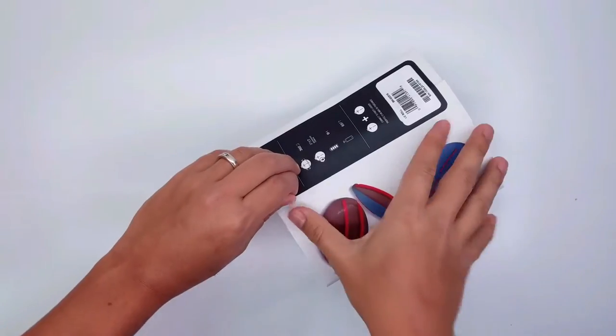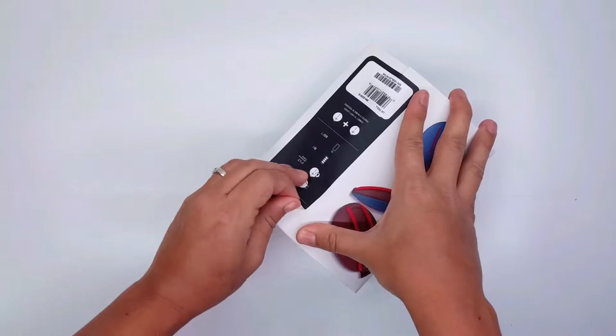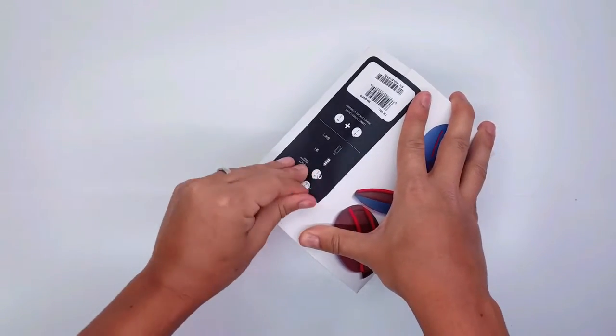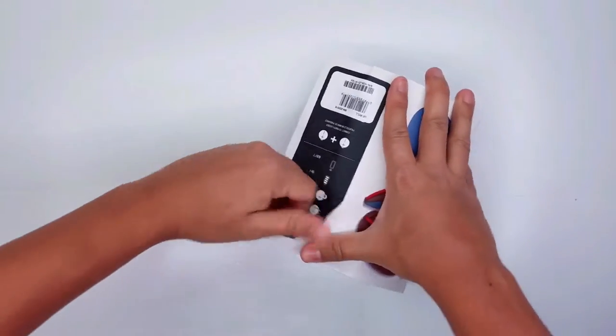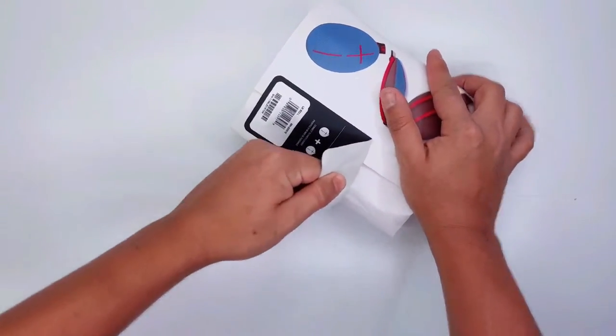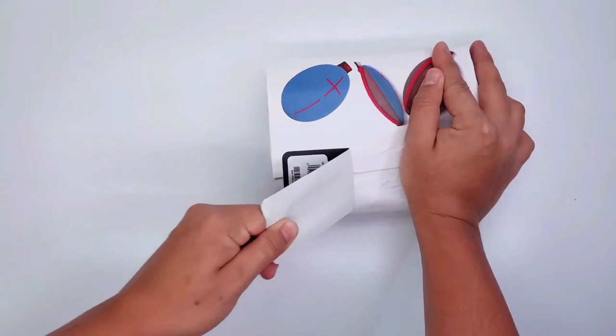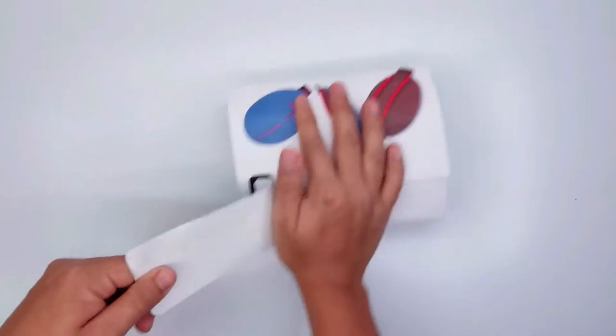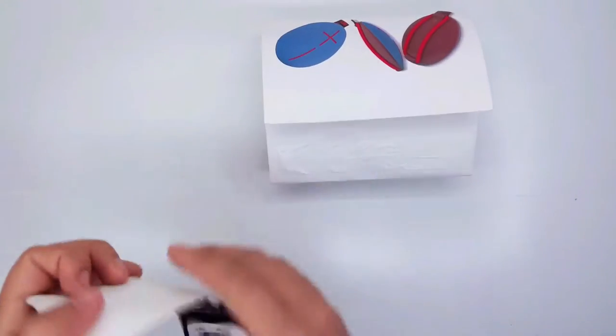All right guys so we're gonna go ahead and remove the sticker in the back. This sticker is really stuck to the box guys so you're gonna have to put some muscle into this to be able to get it out of the way and get to your speaker. All right so we're almost done, that's it we got it.